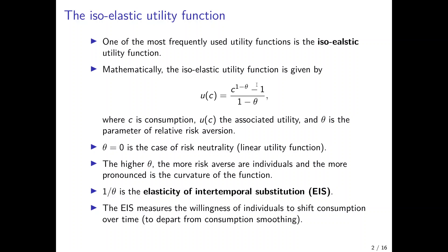For a case of theta equal to 0, we would have risk-neutral individuals. In this case, the utility function becomes linear. Theta equal to 0 means we have c to the power of 1, which is a linear function, and in the denominator we would only have 1.